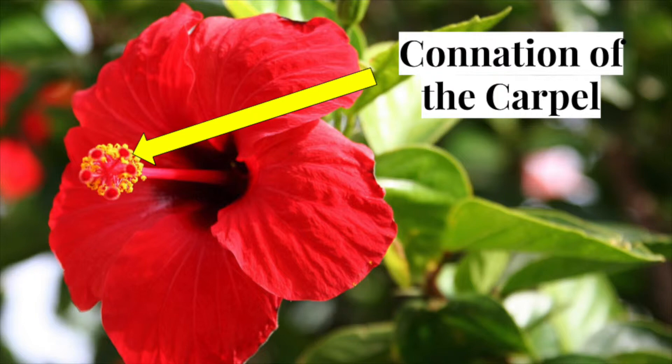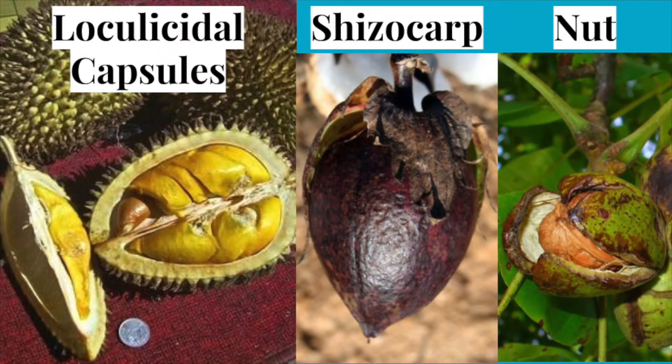The leaves of Malvaceae alternate, have simple lobes, and have veins that radiate outward. The fruit of Malvaceae are often dry, dehiscent, loculicidal capsules.